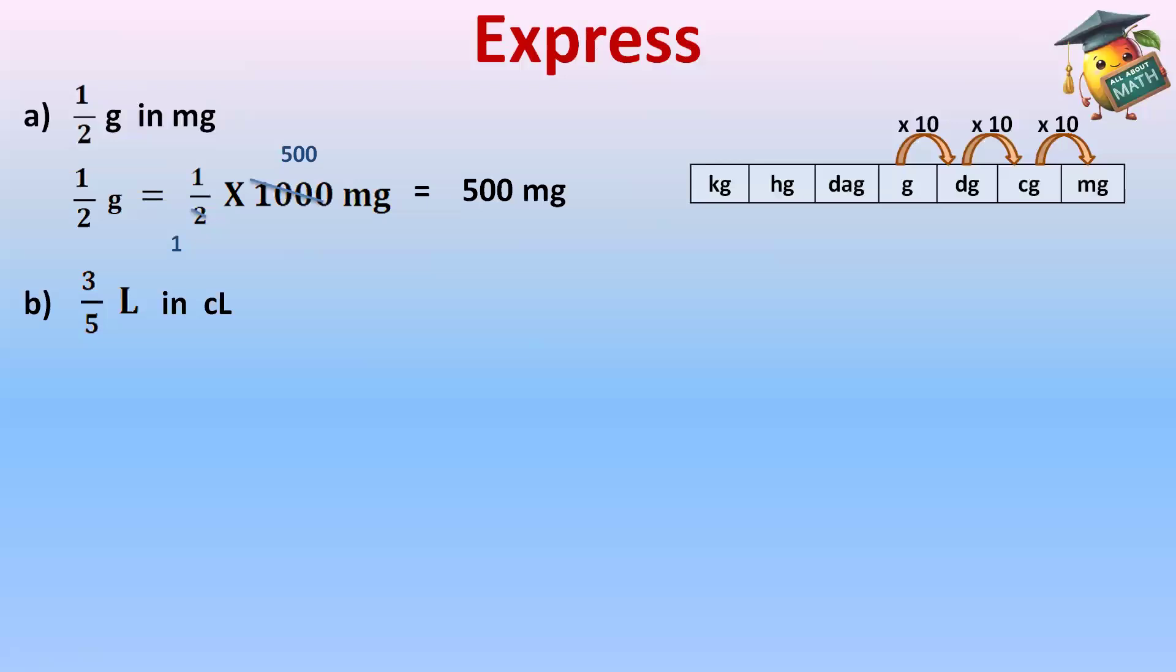Part B, we have 3/5 liters in centiliters. We have to express liter into centiliters. Write the units in sequence. This time, we will use the mnemonic King Henry died, lady didn't cry much.